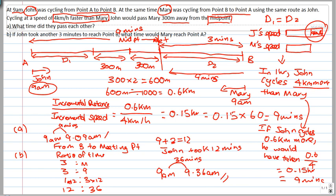So you got answer A and answer B. This is how you attempt this question. Of course there are other ways to do it, so just take a look at this method first.